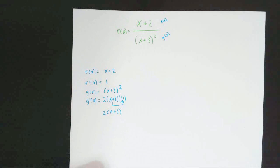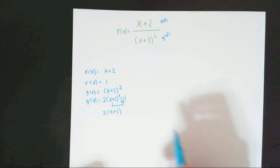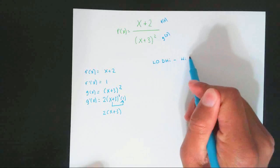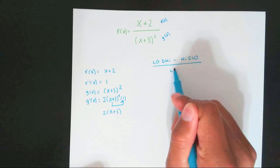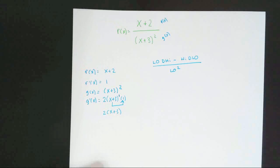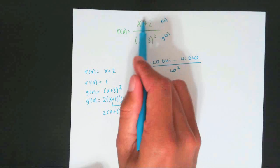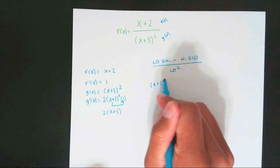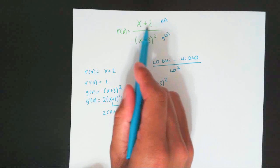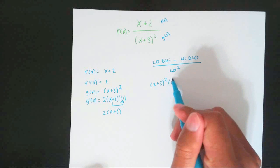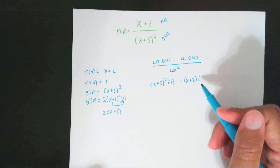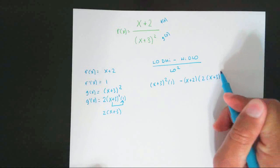Now your next step is to set up your equation. Rather than just memorizing the formula for quotient rule, I'd rather have you memorize this: low d high minus high d low, all over low squared. Low is the bottom because it's lower; high is the top because it's higher. So you write the bottom, x plus 3 squared, times the derivative of the high — derivative of x plus 2 is 1 — minus the high, x plus 2, times the derivative of the low, which is 2(x plus 3).